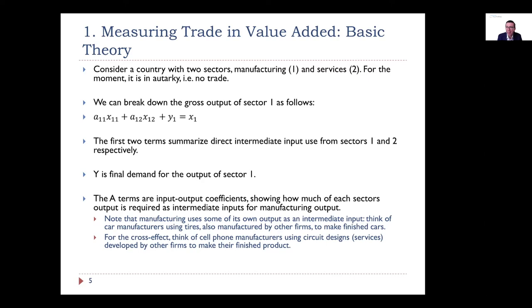The first two terms capture intermediate input use of sector one's output to produce more sector one output, and use of sector two's output to produce sector one's output. The A terms — A11 and A12 — tell us how much output from the respective sectors is needed in a direct sense to produce the gross output of sector one. These are input-output coefficients: sectors use their own output, but also the output of other sectors. Think of someone making a cell phone — they use circuitry and motherboards from their own sector, but also design services, research, finance, and professional services.